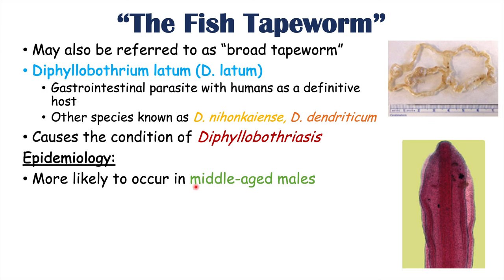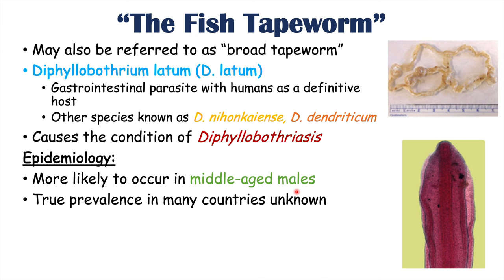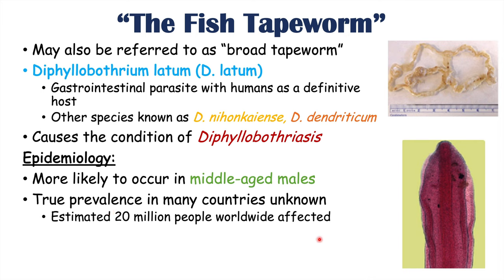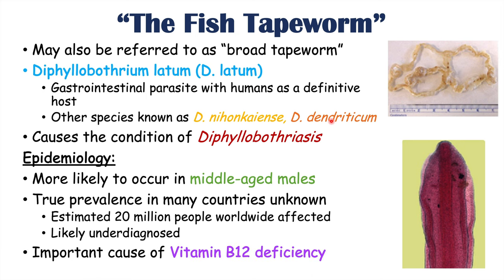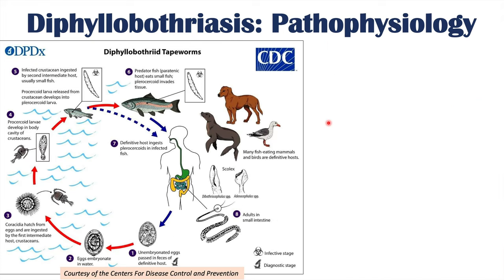Diphyllobothriasis is more likely to occur in middle-aged male patients, but otherwise not much is known about patient predilection. The true prevalence is unknown in many countries, but it is estimated to affect 20 million people worldwide and is likely underdiagnosed. Infection may be on the decline in some areas due to improvements in sanitation, but may be increasing where raw fish consumption is rising. Importantly, these Diphyllobothrial species are important causes of vitamin B12 deficiency.